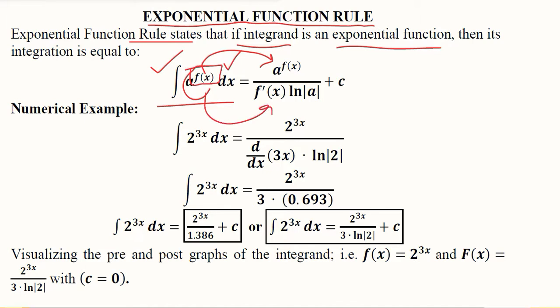We take the derivative of the exponent and write it in the denominator. We take the natural log of the base of the exponential function, which is a, and multiply it with the derivative of the exponent that we have already placed in the denominator. Then we add c, that is the arbitrary constant of integration.